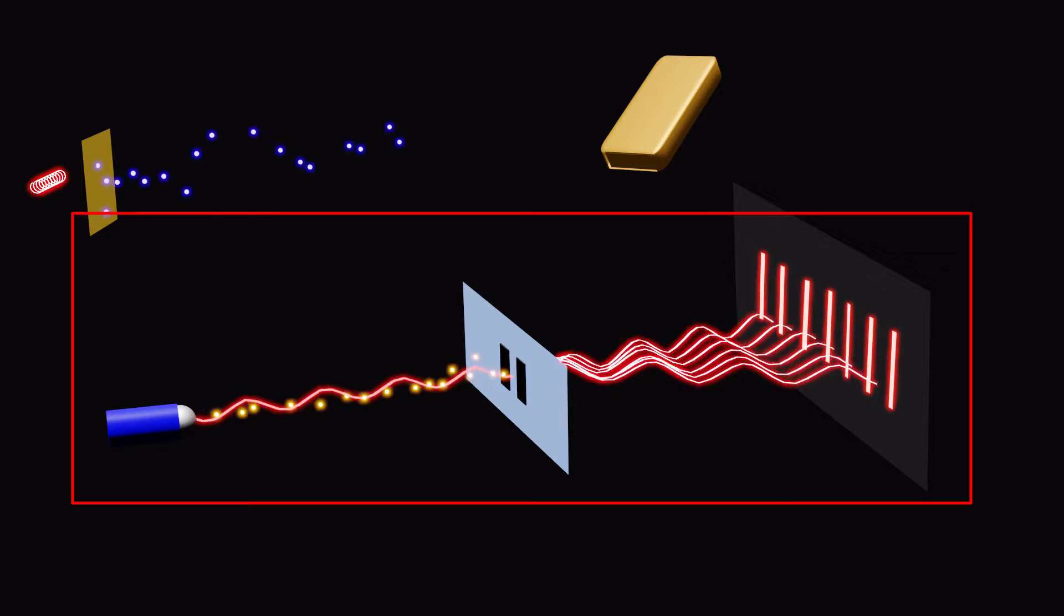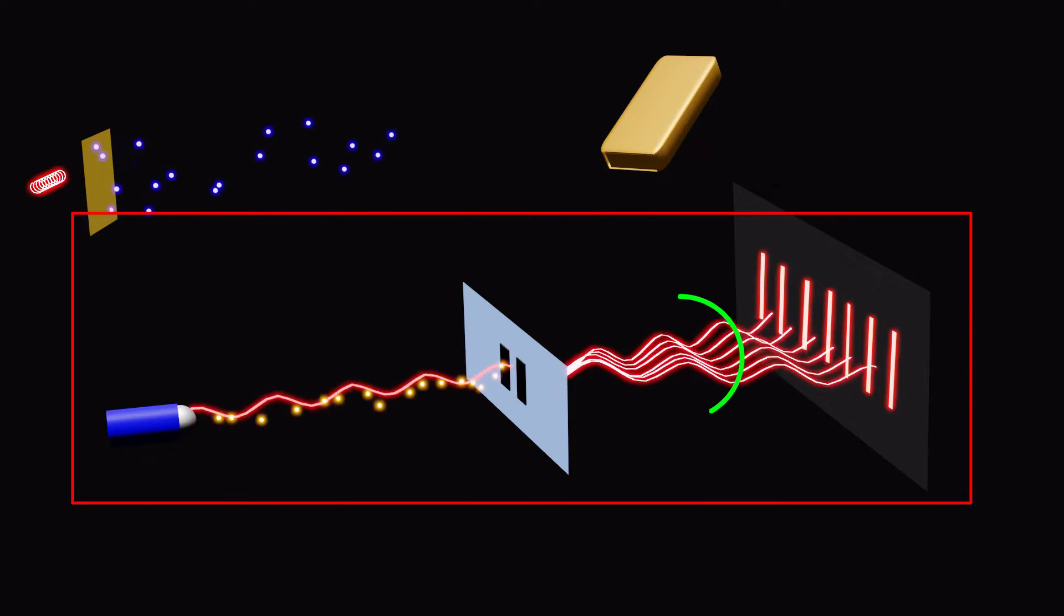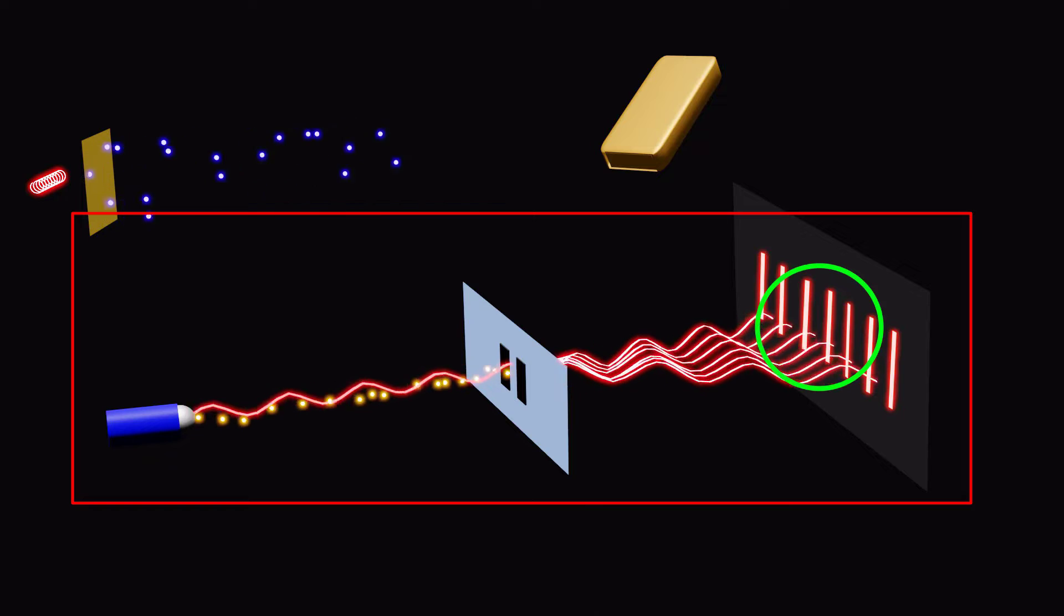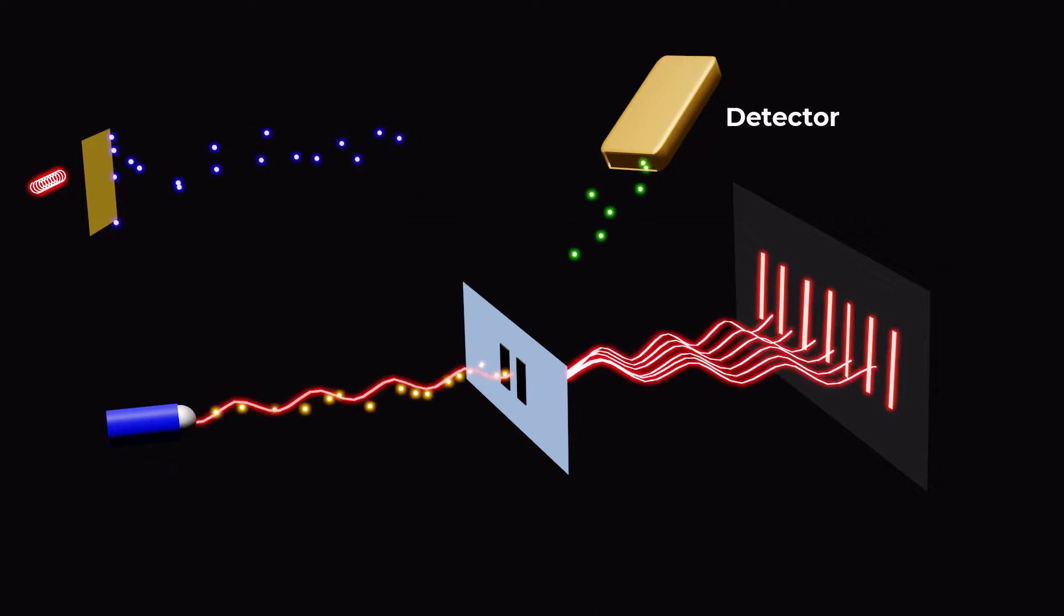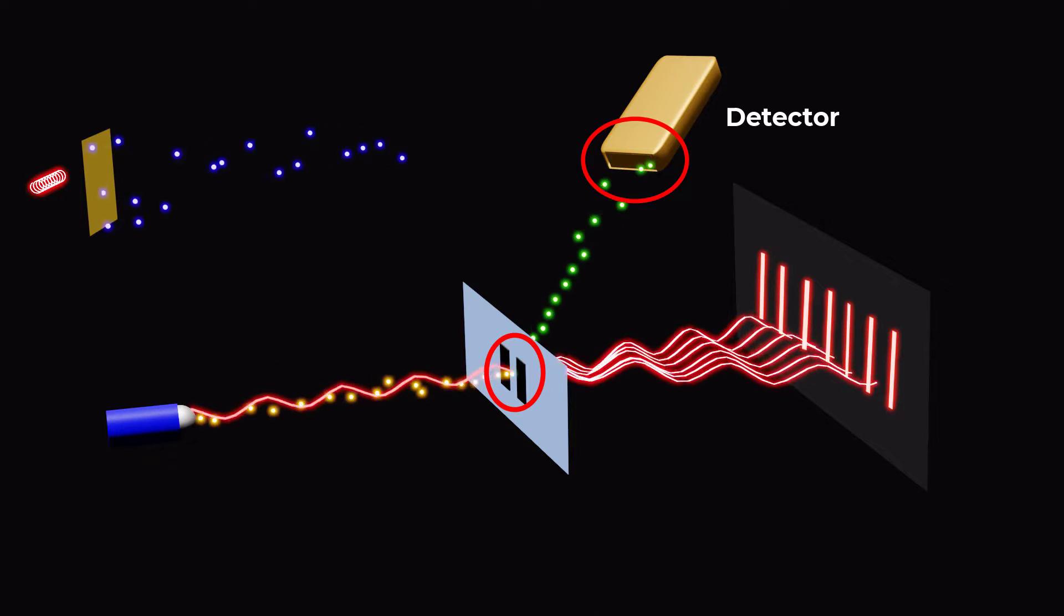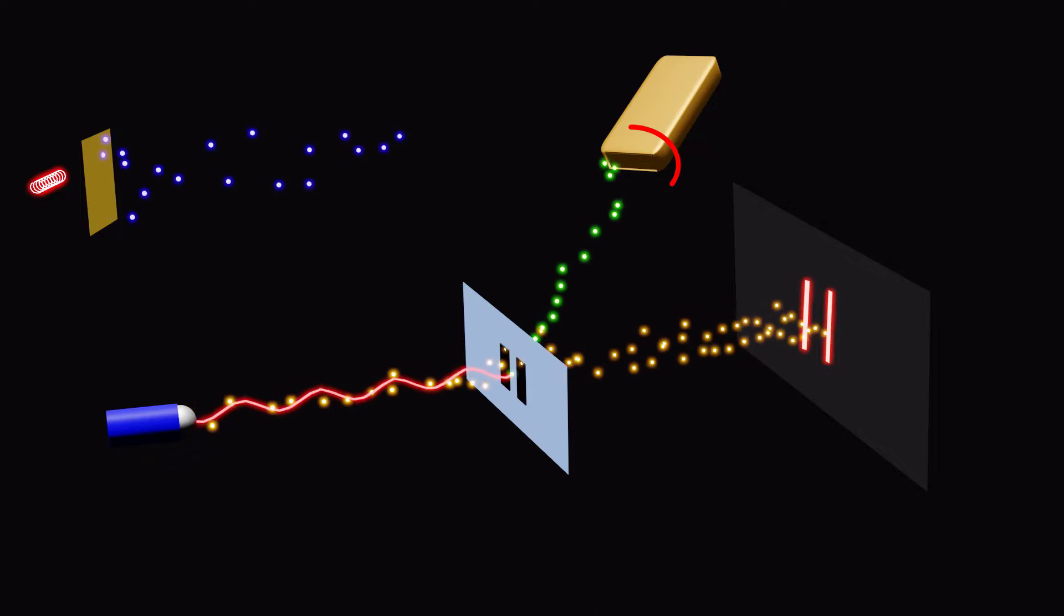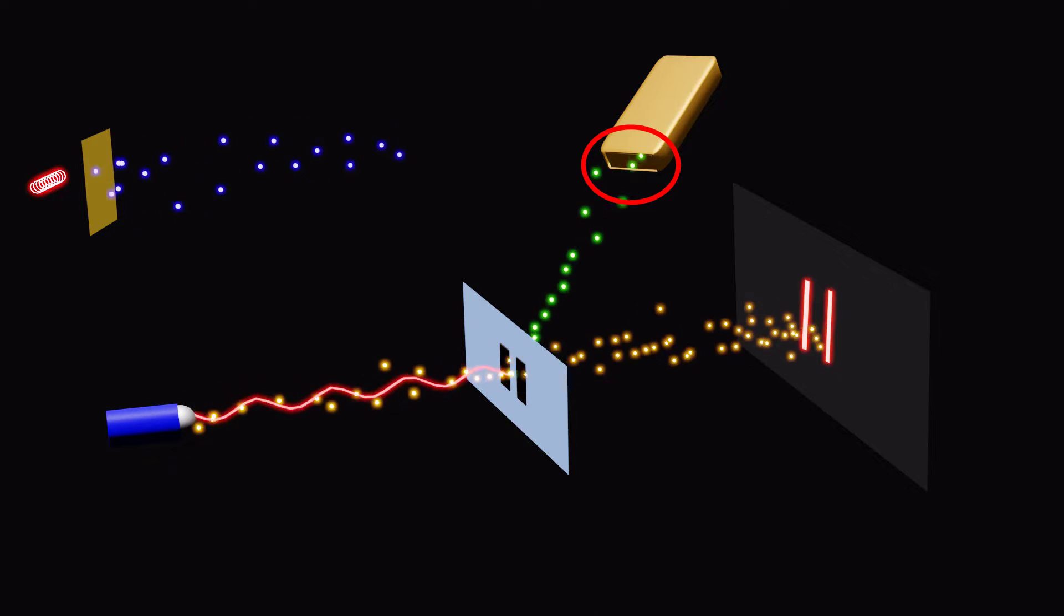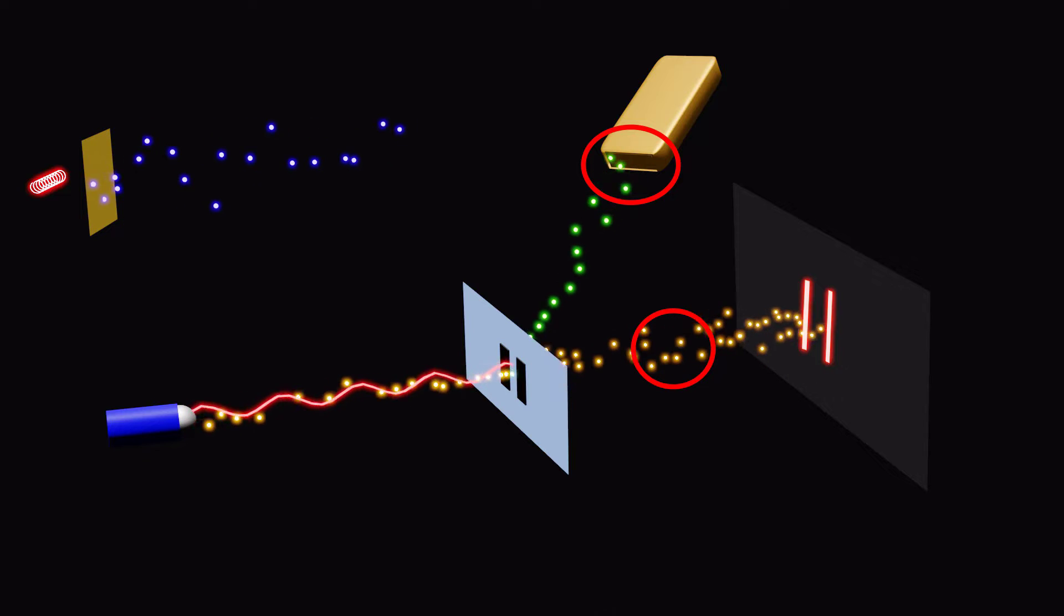For instance, when light passes through two narrow slits in the double slit experiment, it behaves as a wave and creates an interference pattern on a screen. However, if we introduce a detector to determine which slit the photon passes through, the interference pattern disappears and we observe two distinct patterns on the screen. This shows that the act of measurement disturbs the wave-like behavior and light starts behaving as particles following distinct paths.